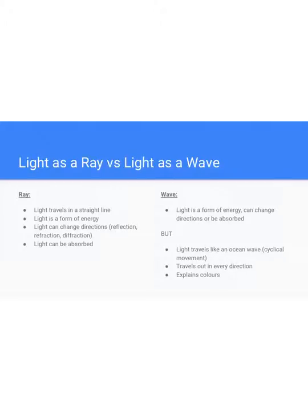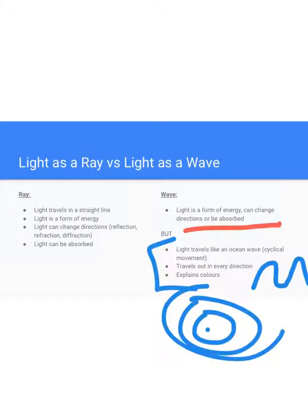What we're going to do now is look at how light can also travel like a wave. When we think of waves, we think of ocean waves, and we are going to do a lot of comparisons of light to ocean waves. In the wave model of light, we notice that light is also a form of energy and can change directions or be absorbed. However, the differences are that light, instead of traveling in a straight line, travels like an ocean wave with a cyclical motion of up and down repetitiveness. It also travels out in every direction. If you think of a pebble being thrown into the water, you'll notice that the ripples go out in every direction outwards, and light will do the same thing. Lastly, the wave model of light allows us to understand colors.